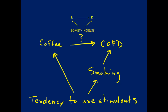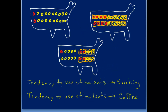There are a couple of things to note about this diagram. The arrows from the tendency to use stimulants — one going into coffee and one into smoking — represent the same thing as the arrow from coffee to COPD: a causal effect. We think about these the same way we've used before, by imagining the entire population either exposed or not exposed to the tendency to use stimulants.